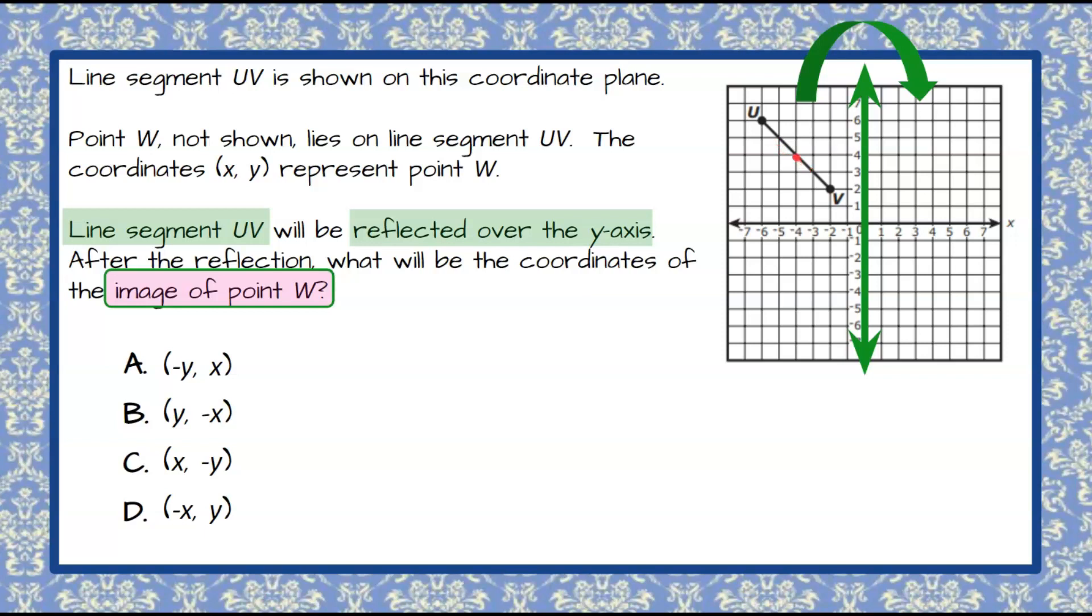So although we don't know the exact location of W, we can look at what happens to U and V so that we can determine what our correct solution is for W.